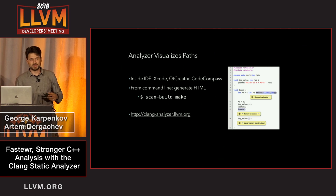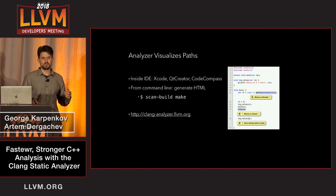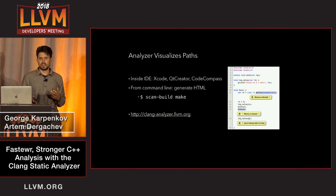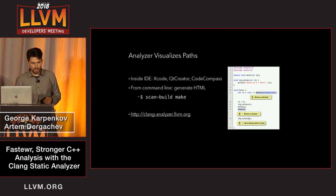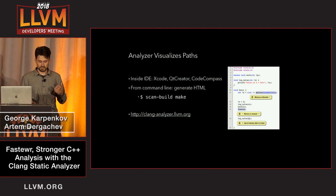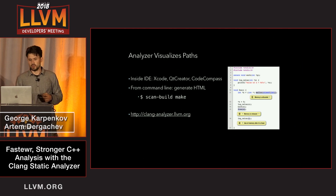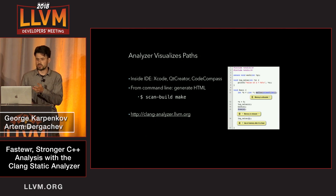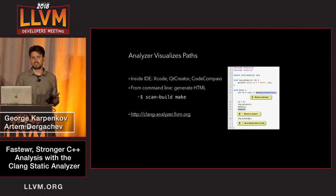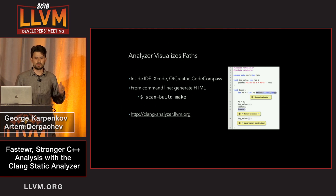The report basically visualizes a path to the bug for the user, so that the engineer can take a look at it and hopefully see the original issue and fix the bug. The analyzer is embedded inside a few IDEs, but even if you're not using one of those, we also ship a tool called ScanBuild, which just wraps your build system invocation and generates those static HTML reports. For more details, you can go to the webpage on the slide.